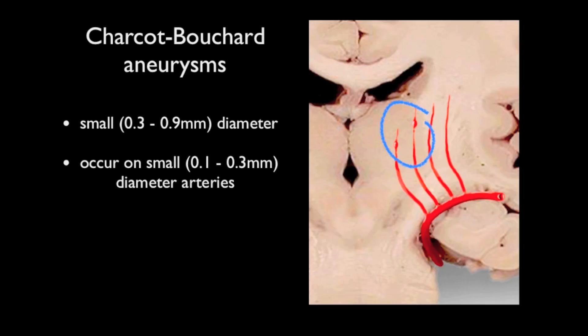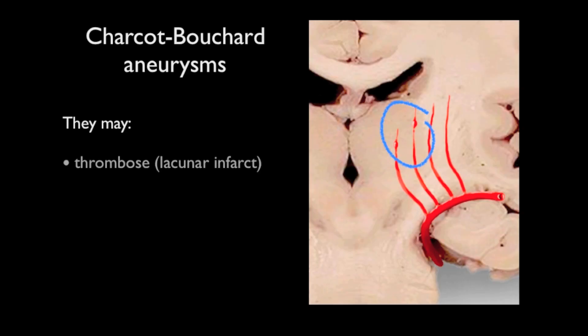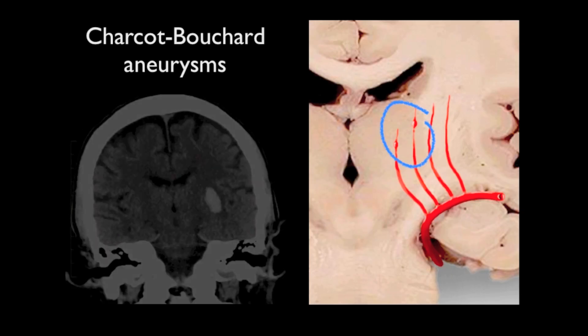Charcot-Bouchard aneurysms are somewhat controversial and are not usually identified on imaging. The distribution of these aneurysms matches those of hypertensive hemorrhages, with most being found in the lenticular striate vessels of the basal ganglia. These aneurysms arise as a result of chronic changes within the walls of these perforating vessels, which can go on to either thrombose — causing a lacunar infarct — leak resulting in micro hemorrhages, or rupture resulting in a true hemorrhage.